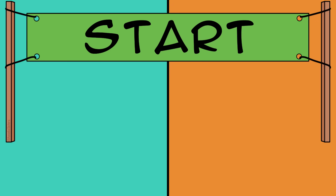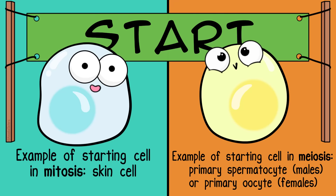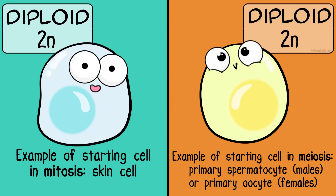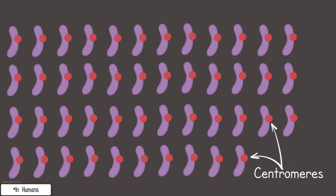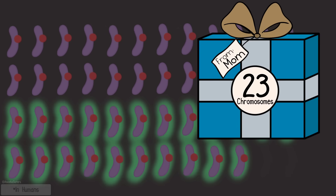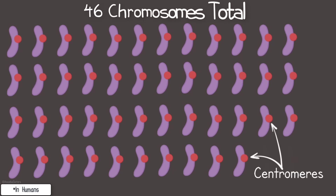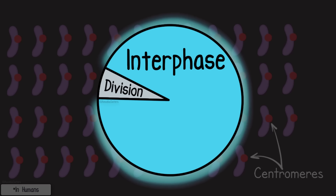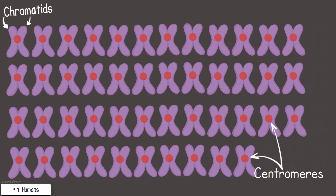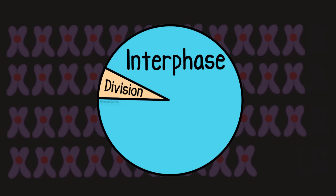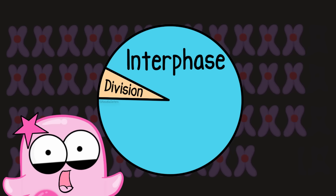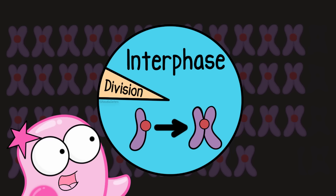Before we start mitosis and meiosis, let's look at what you start with. Your starting cell in both mitosis and meiosis is diploid—written here as 2N—meaning it has 2 sets of chromosomes. In humans, that's 1 set of 23 chromosomes from mom and 1 set of 23 chromosomes from dad—46 chromosomes total. During interphase, the cell duplicates the chromosomes. When you duplicate 46 chromosomes, you still say there are 46 chromosomes, as the newly duplicated portion is still attached at the centromere region, but there are actually 92 chromatids. Interphase isn't part of mitosis or meiosis, but it's a really important phase because it duplicates chromosomes before we get started.